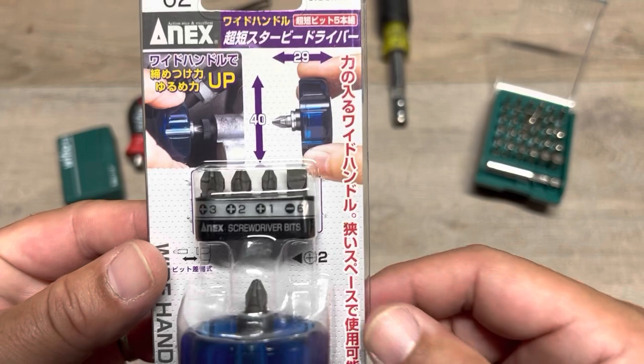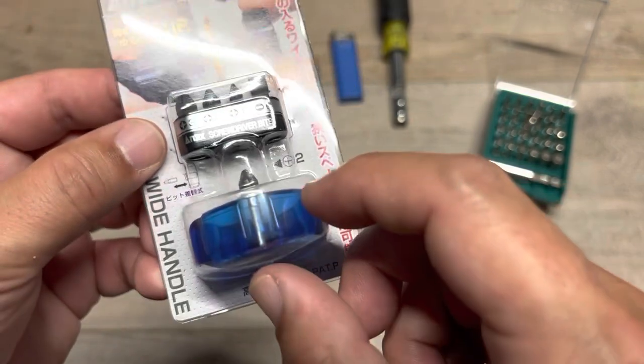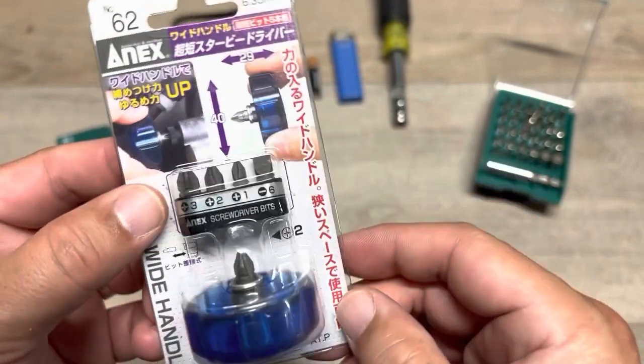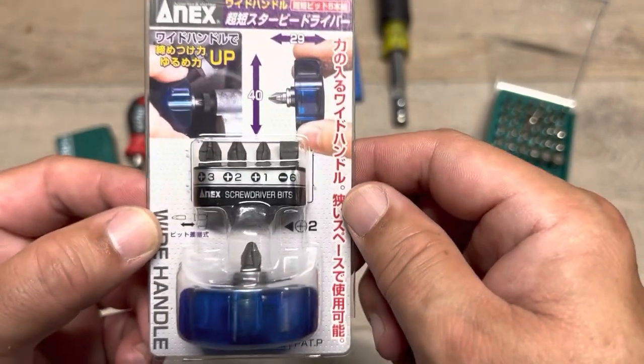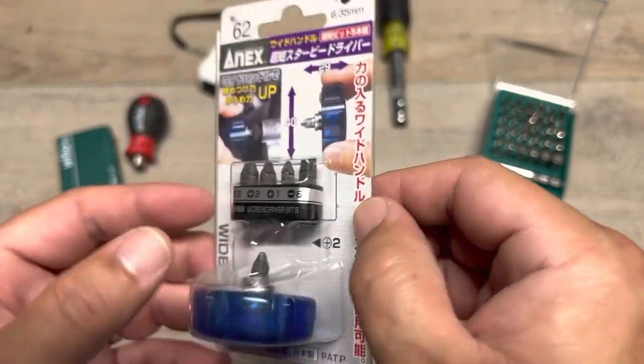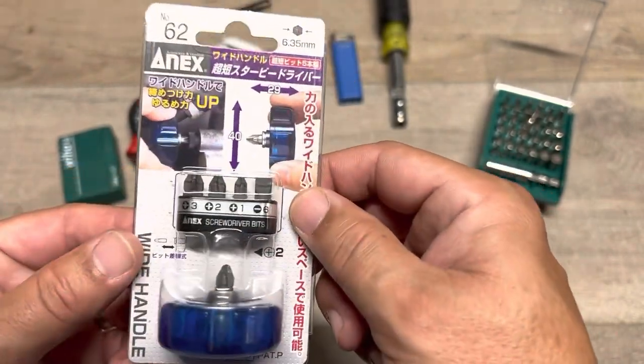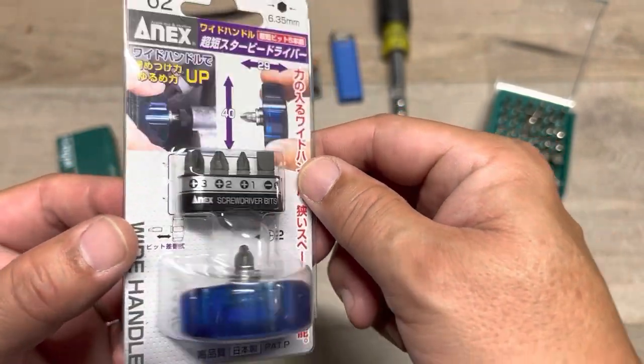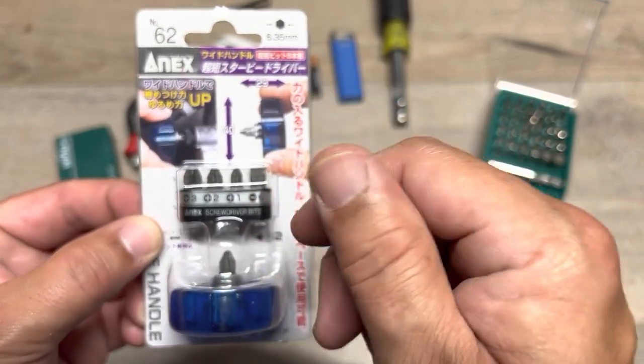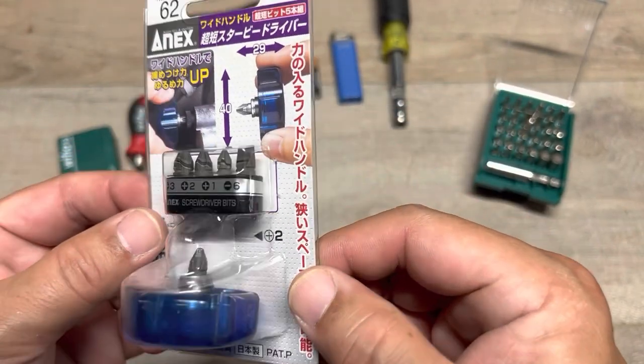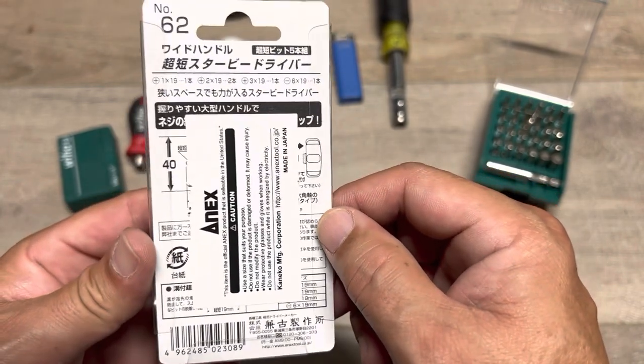We're always doing the Wera and the Wiha. I like my domestic brands also, don't get me wrong. But some of these, especially from Japan, are kind of unique tools. So I can't really explain everything here. I can't tell you what all it says. Wide handle, this is the number 62, so I'm guessing they make different models of this.